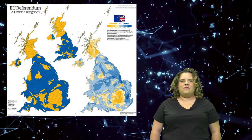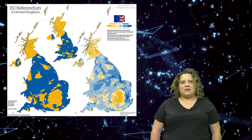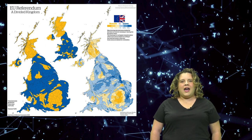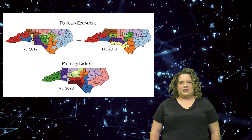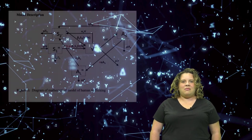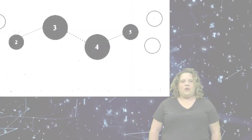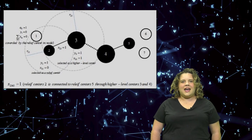Let's look at the types of problems that you may see. You may be asked to investigate how the power distribution of the European Union changed after Brexit, or how to evaluate the fairness of a redistricting plan. You may also investigate the mathematics of human trafficking.